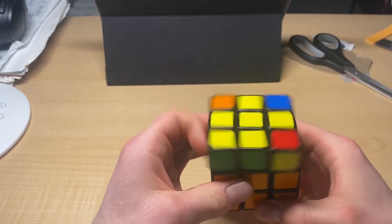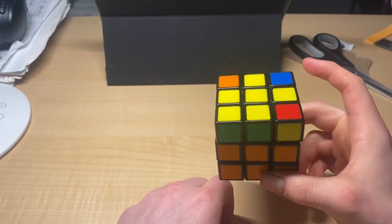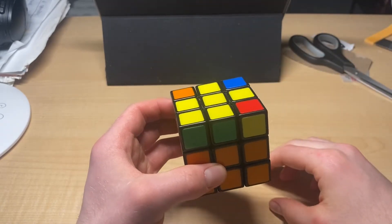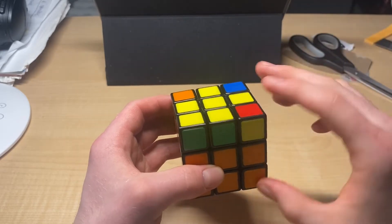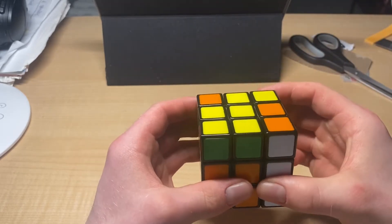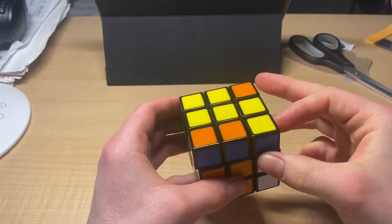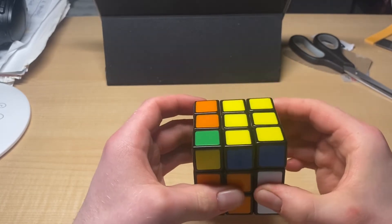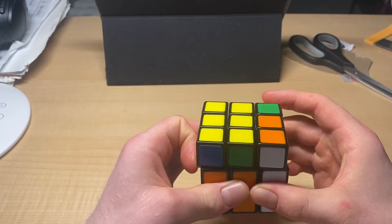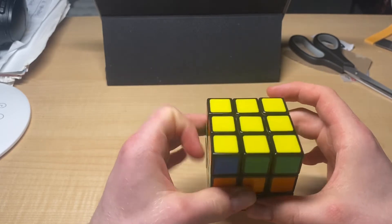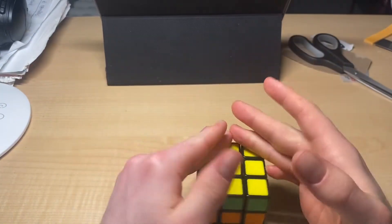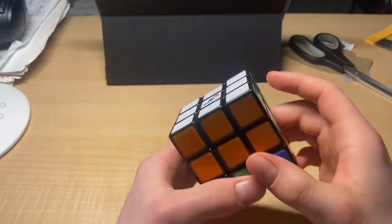And if you do it one more time, R, U, R prime, U, R, U2, R prime. And then you've solved the yellow side without disturbing the rest.